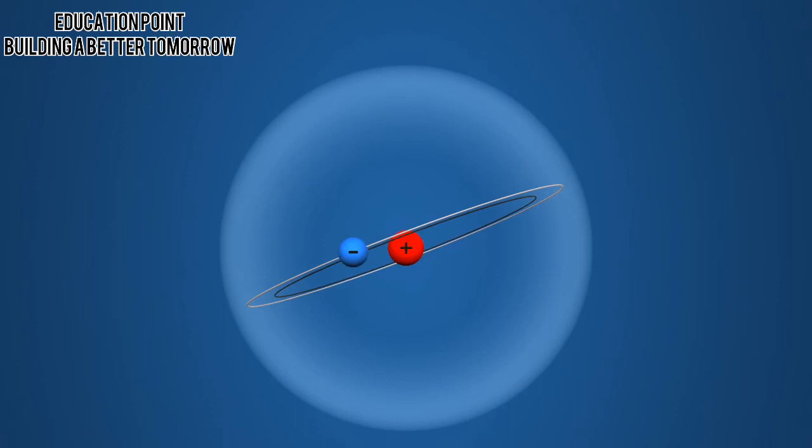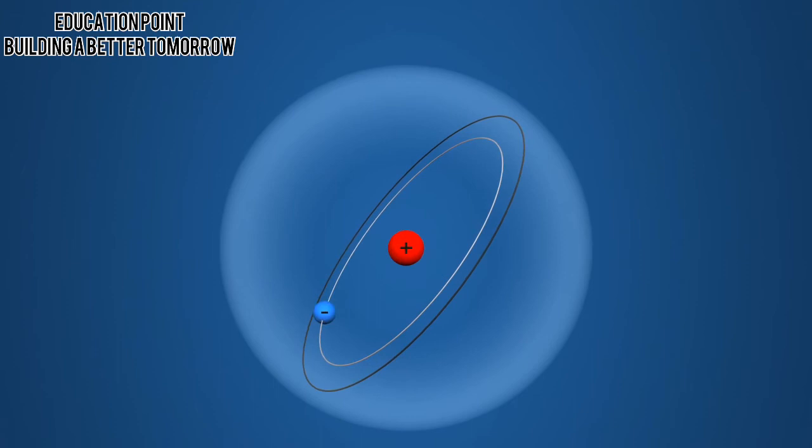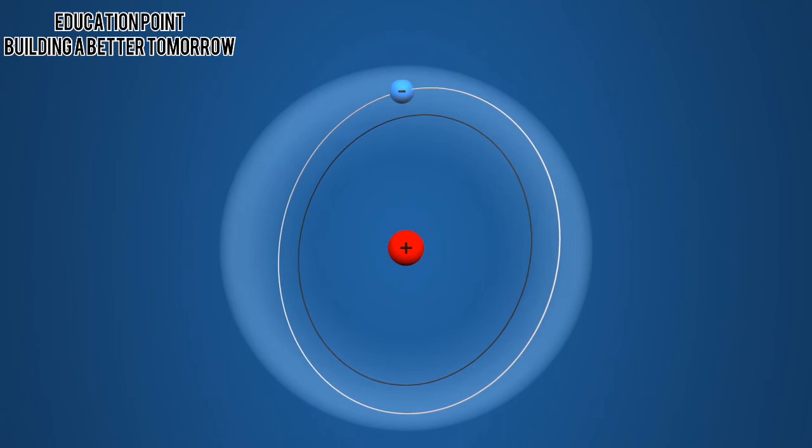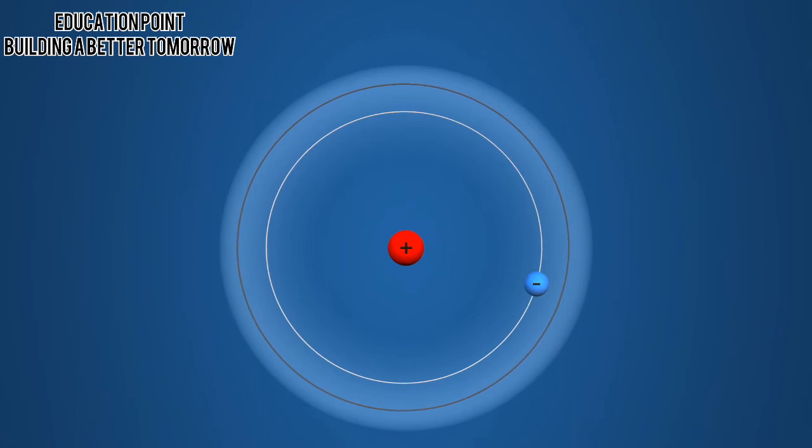As the electron can only absorb or emit the photon with the energy necessary for the jump, the emission and absorption spectra of atoms are not continuous. This matches experimental results with hydrogen atoms.